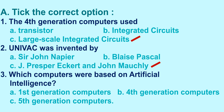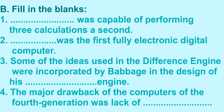Third question: which computers were based on artificial intelligence? Option A: third generation computers, Option B: fourth generation computers, Option C: fifth generation computers. The right option is Option C: fifth generation computers. Now let's move on to fill in the blanks. First question: dash was capable of performing three calculations a second. The right answer is: Mark 1 was capable of performing three calculations a second. Second question: dash was the first fully electronic digital computer. The right answer is: ENIAC was the first fully electronic digital computer.